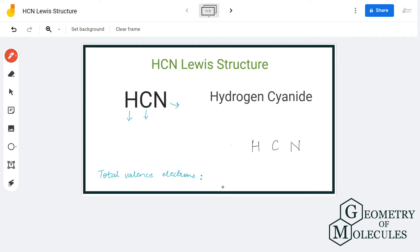Here hydrogen has one valence electron, carbon has four valence electrons, and nitrogen has five valence electrons. So in total we have 10 valence electrons.